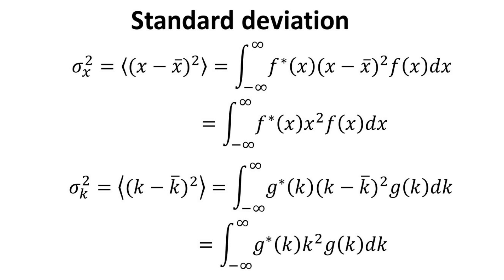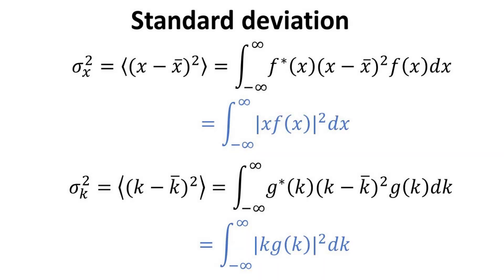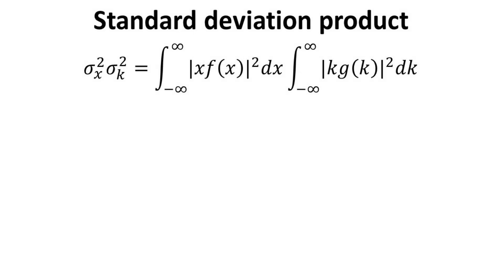We can also express the final form in a more compact manner as follows, taking note of the fact that the functions f of x and g of k are in general complex, but the variables x and k are real. With these expressions at hand, we can then write down the product of the variance of x with variance of k as follows.